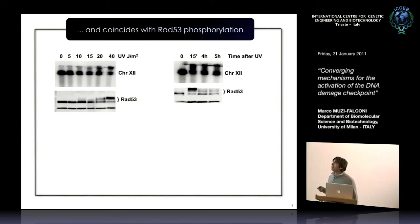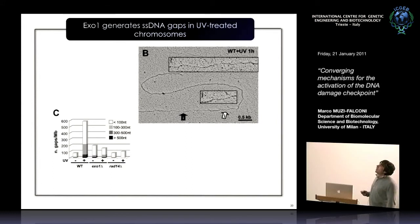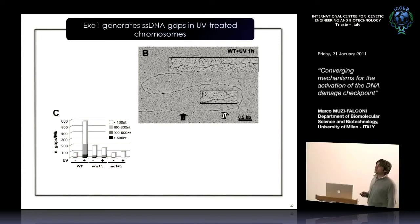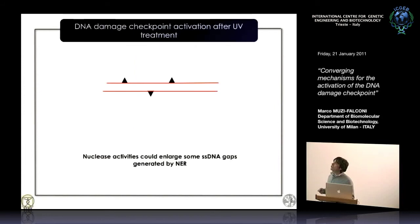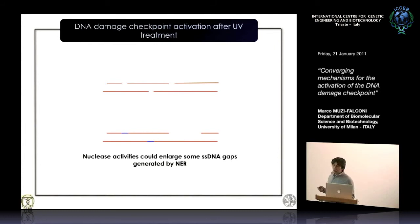We could see a lot of single-stranded DNA gaps in DNA from wild-type cells after UV irradiation. The single-stranded DNA gaps are gone if you don't have nucleotide excision repair or if you don't have XO1. So the idea is: you have lesions, you remove most of them normally, but at some sites something XO1-dependent happens — single-stranded DNA gaps are generated — and this triggers the checkpoint. Then these gaps are refilled.